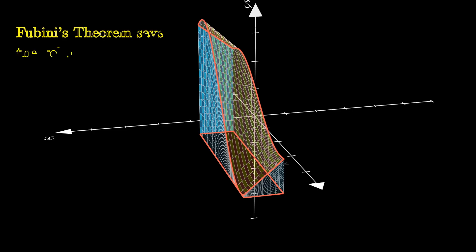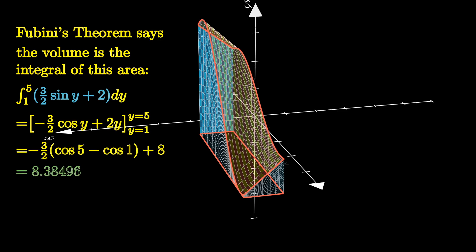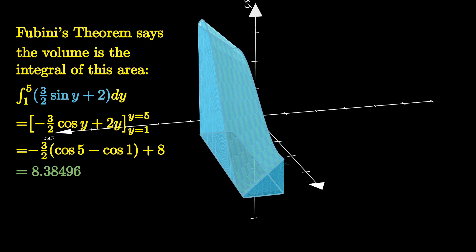Fubini's theorem says the volume of the solid is the integral of this area expression with respect to Y. Again, we obtain that the volume of the solid is about 8.38496. And here's how you can visualize why integrating this cross-sectional area yields the volume of the solid. If you found this helpful, let me know and like and subscribe for more.